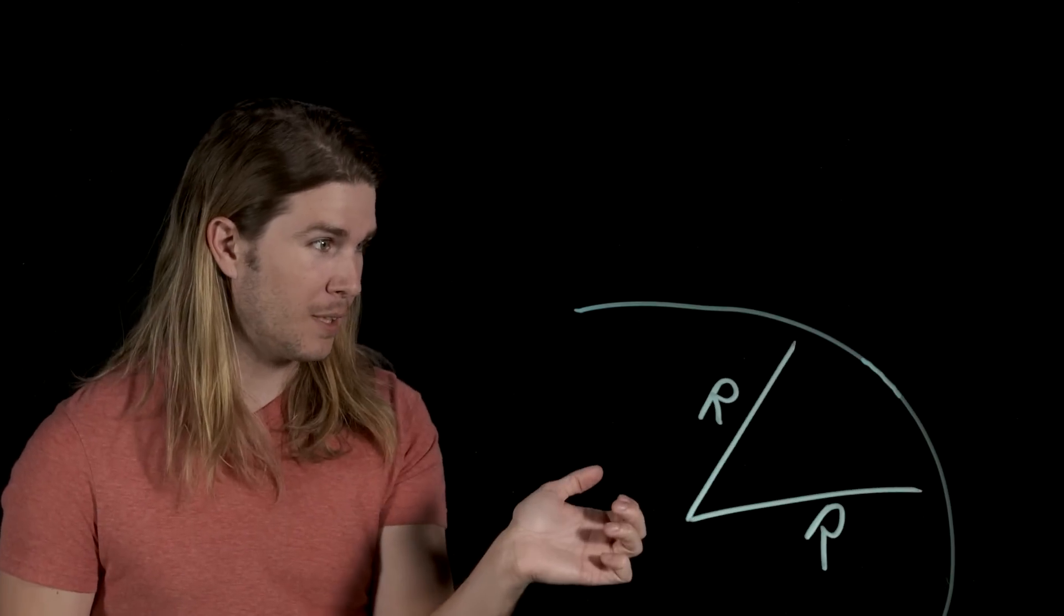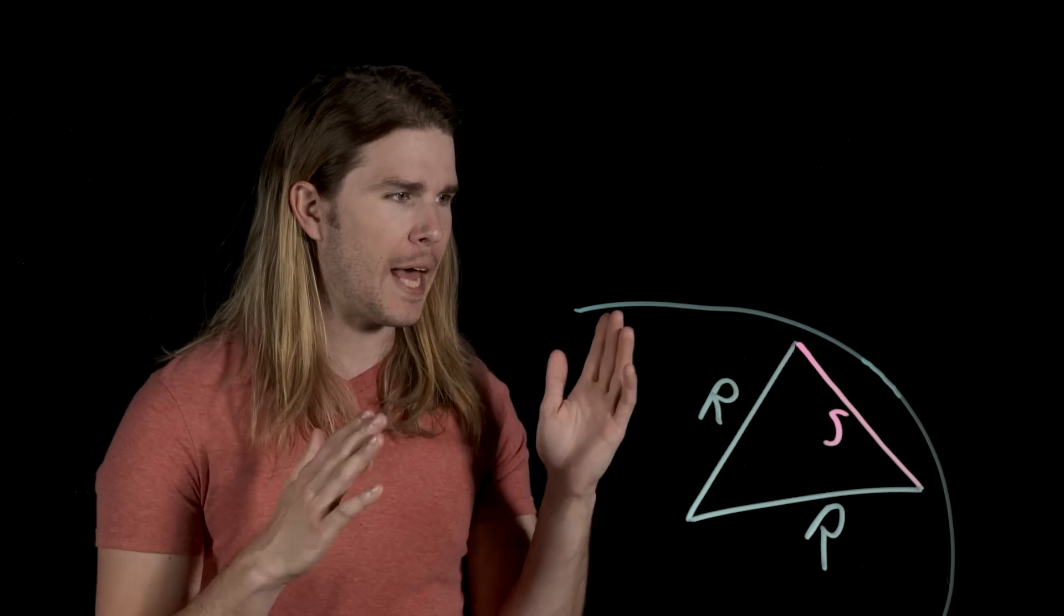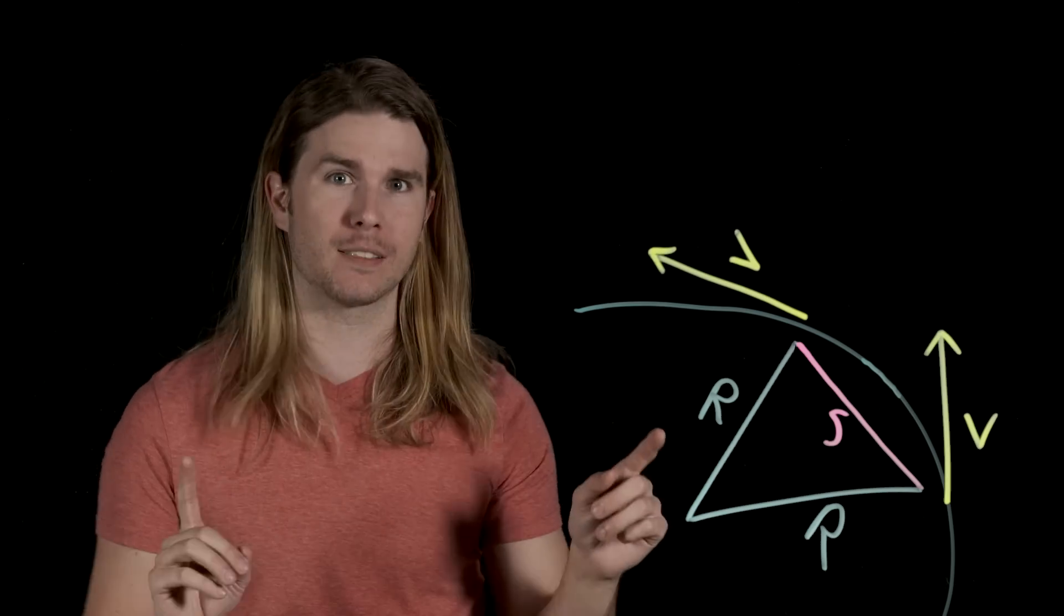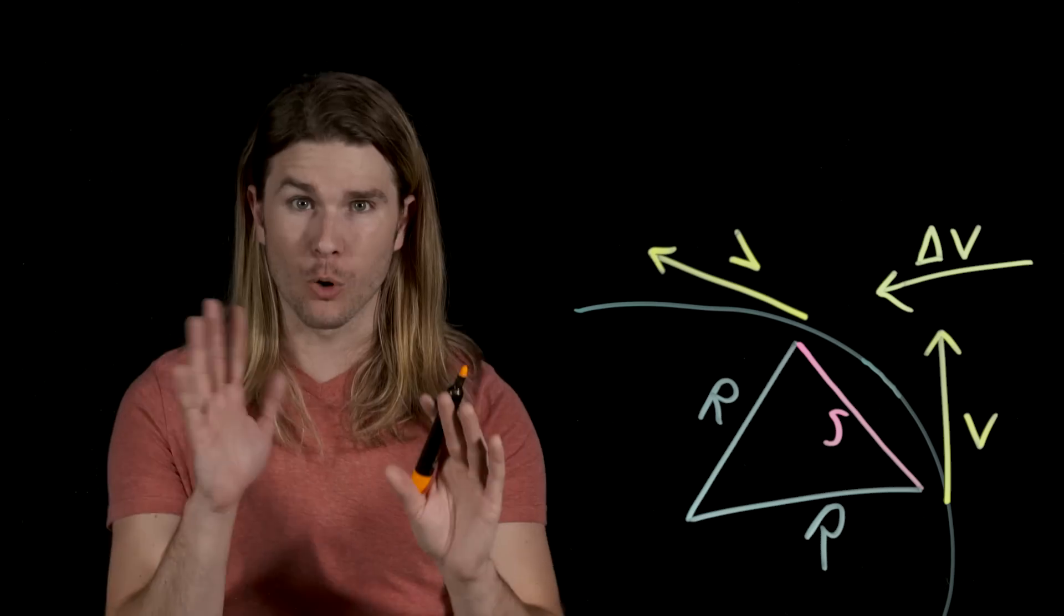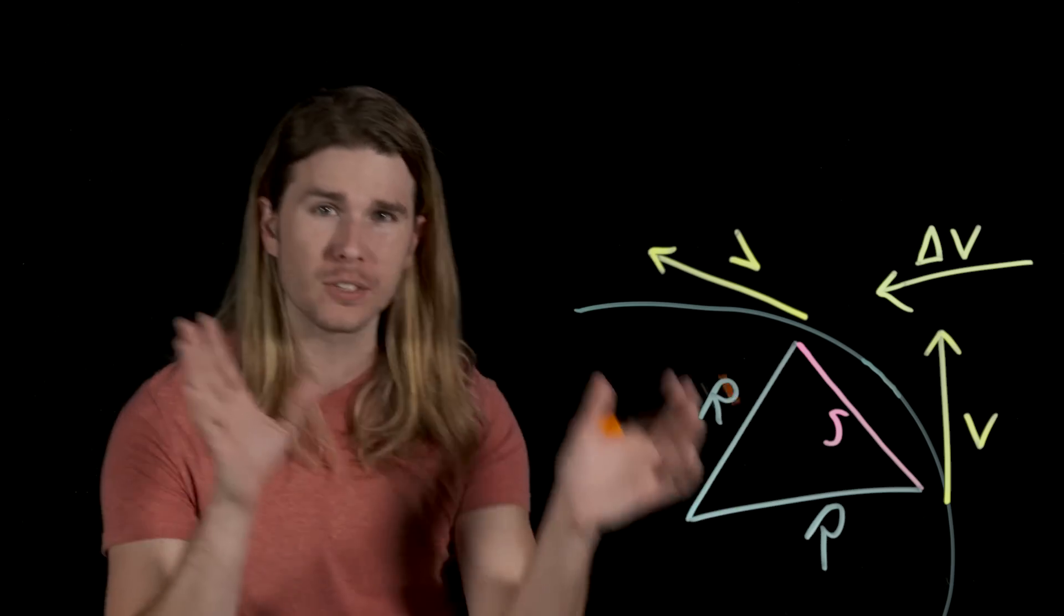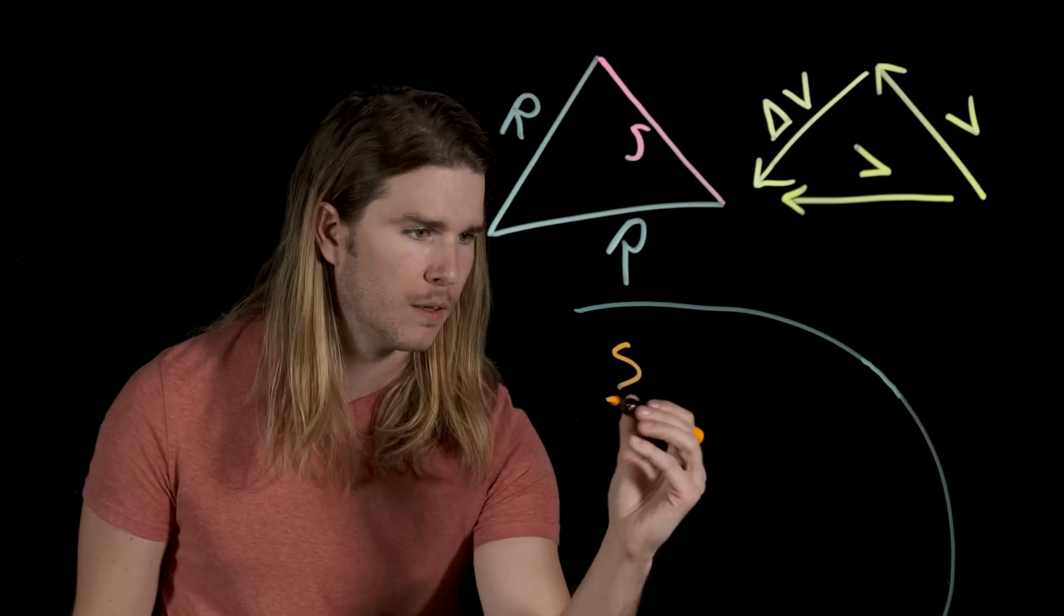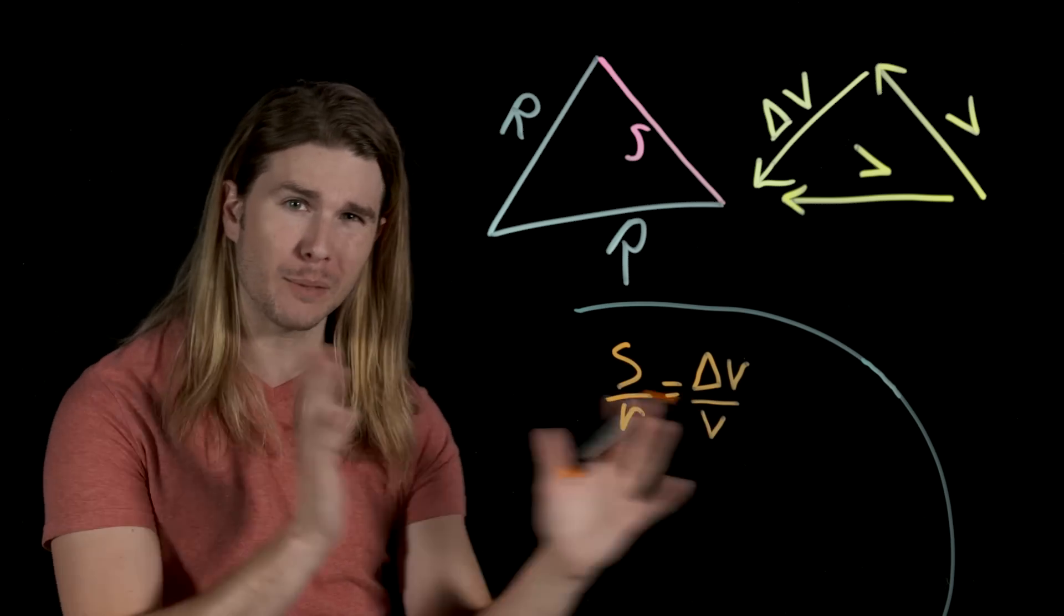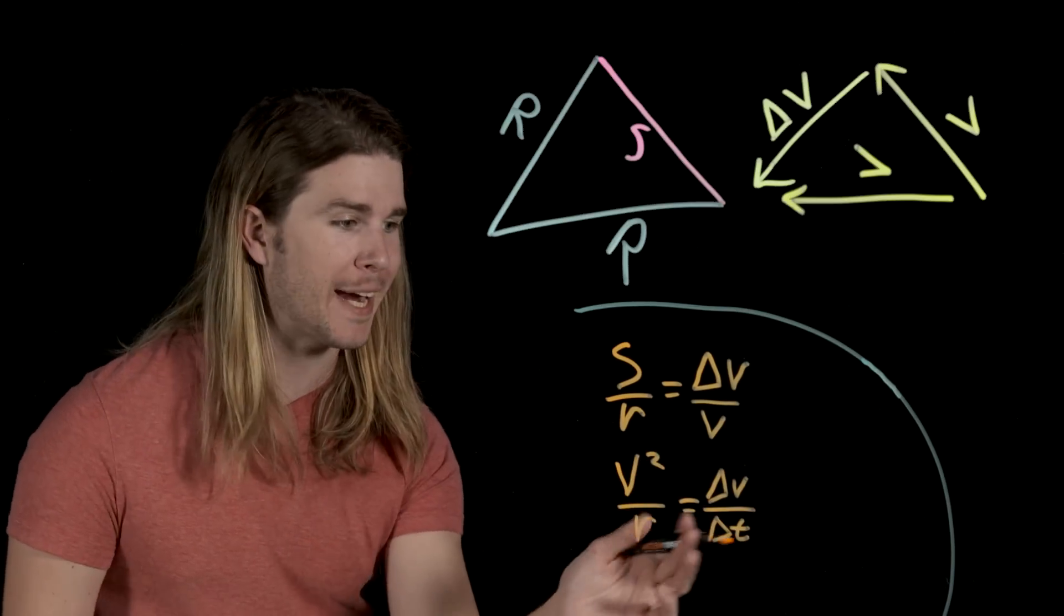What sound does shooting webs make? Anyway, if Spider-Man was traveling in an arc, then he would have a velocity at this point, and that point. And he would have a change in velocity between his positions that looks something like the difference between those two, like that. So, if you move these arrows around and compare them to the radius of this arc R and the distance that Spider-Man basically moves in the arc S, you get two similar triangles. And if you compare these two triangles, you get a relationship. S over R equals delta V, or the change in velocity over V.